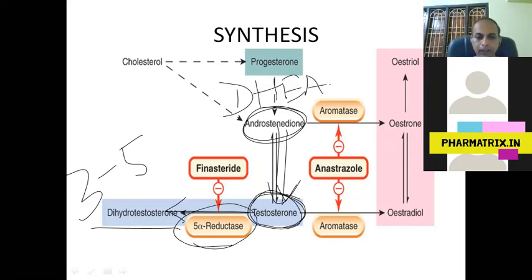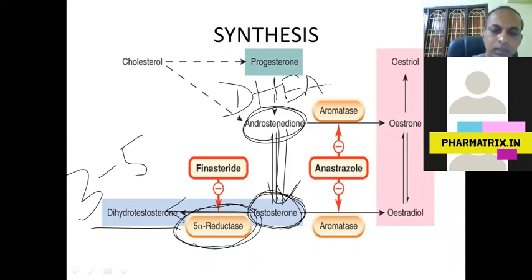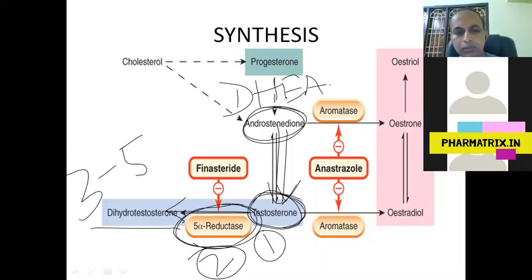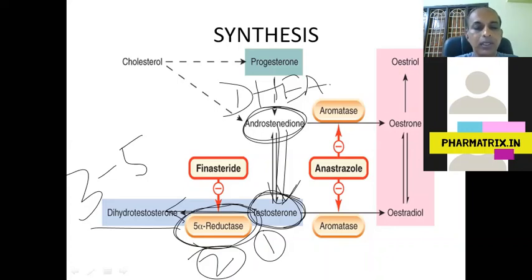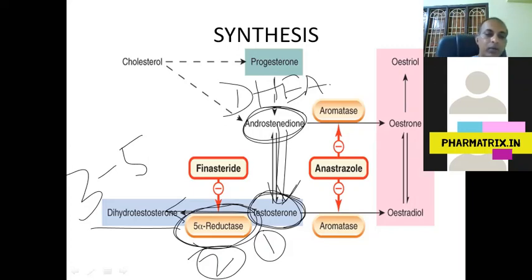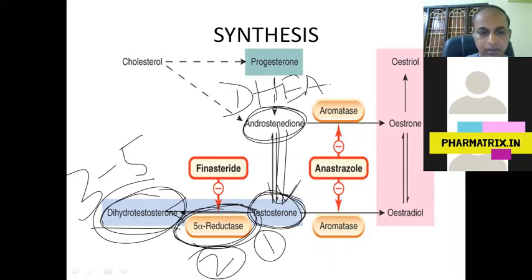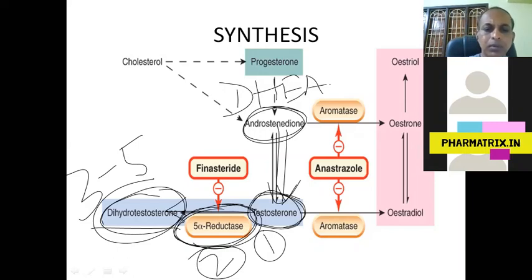The enzyme involved in converting testosterone to DHT is 5-alpha reductase. It has two isoforms: type 1 and type 2. Type 2 is particularly confined to locations where secondary sexual characters are dominant — axillary hair, facial hair, and skin — where DHT causes more prominent masculine activity. When this path is blocked, secondary sexual character development is affected.